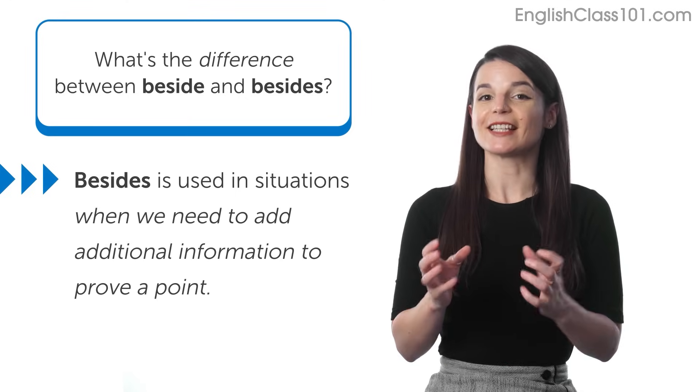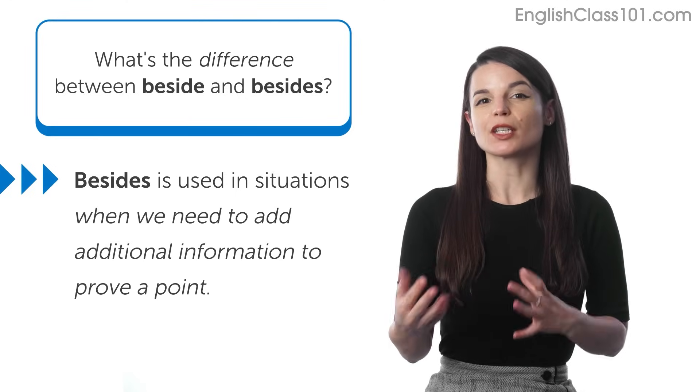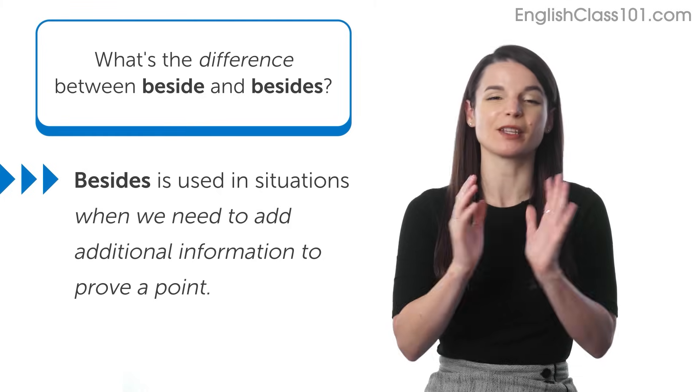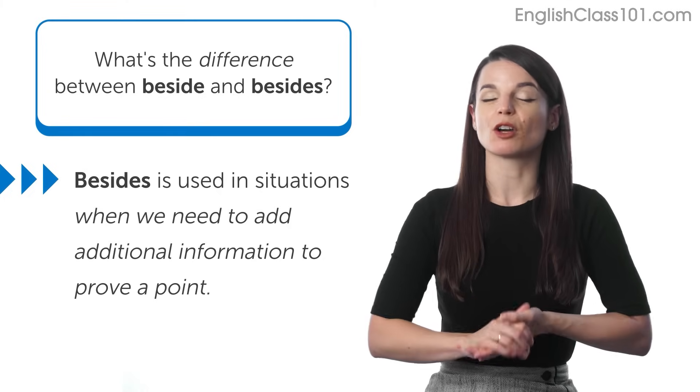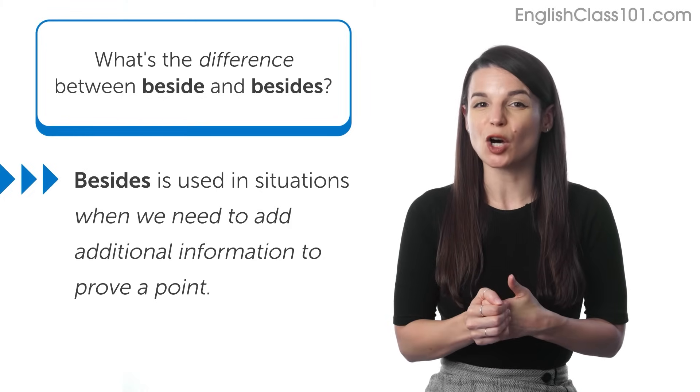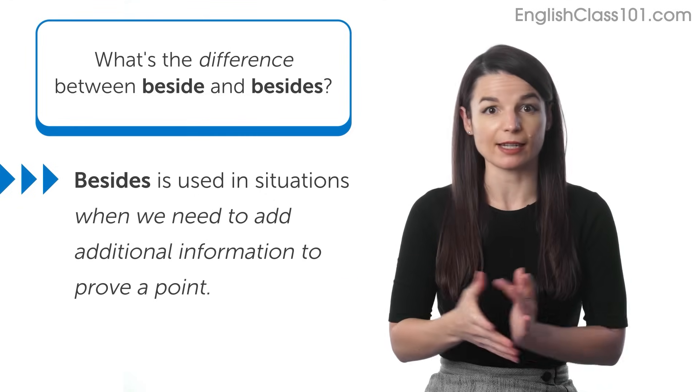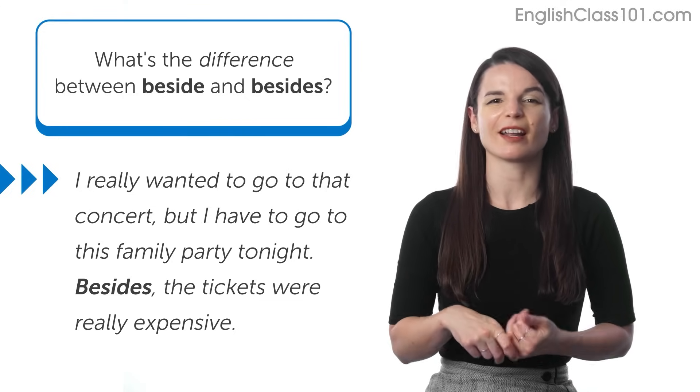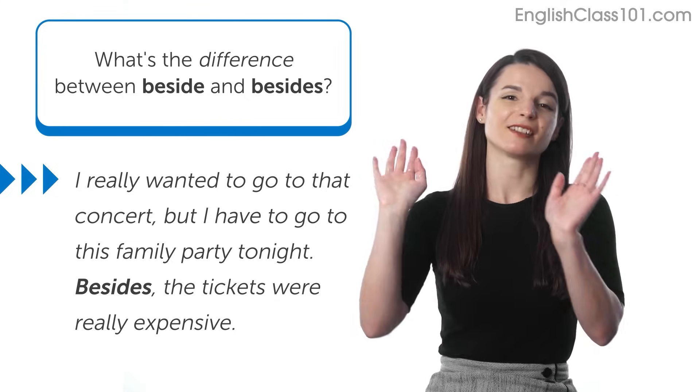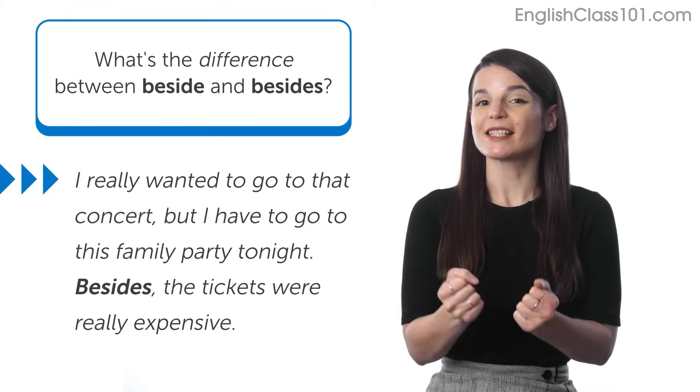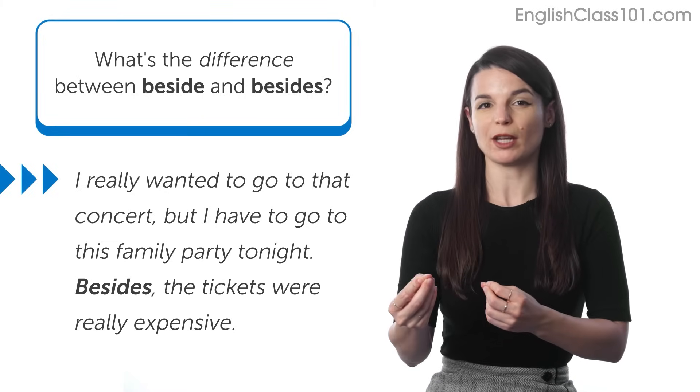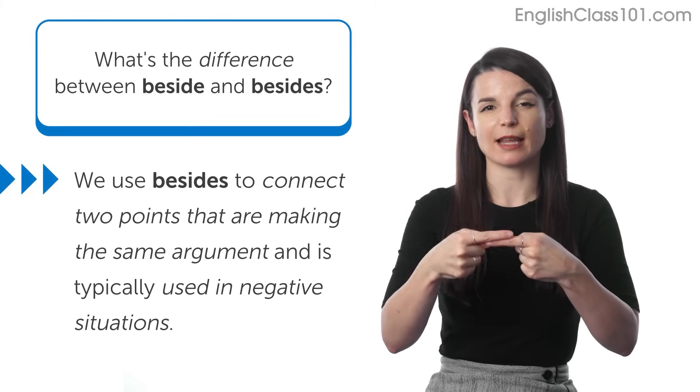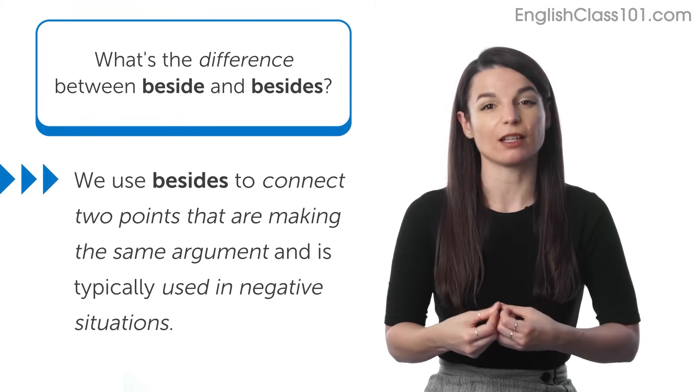On the other hand, besides with an S at the end is used to talk about situations in which we need to add a little bit of extra information to prove a point. So here's an example of this. Let's say you're thinking about going to a concert and you really want to go, but you're not able to because you have a family engagement, for example, like you have a family birthday party or something. You might say, I really wanted to go to that concert, but I have to go to this family party tonight. Besides, the tickets were really expensive. So that besides means in addition to this situation, something else. So we kind of use besides to connect two points that are making the same argument. And we typically do it with kind of negative situations.